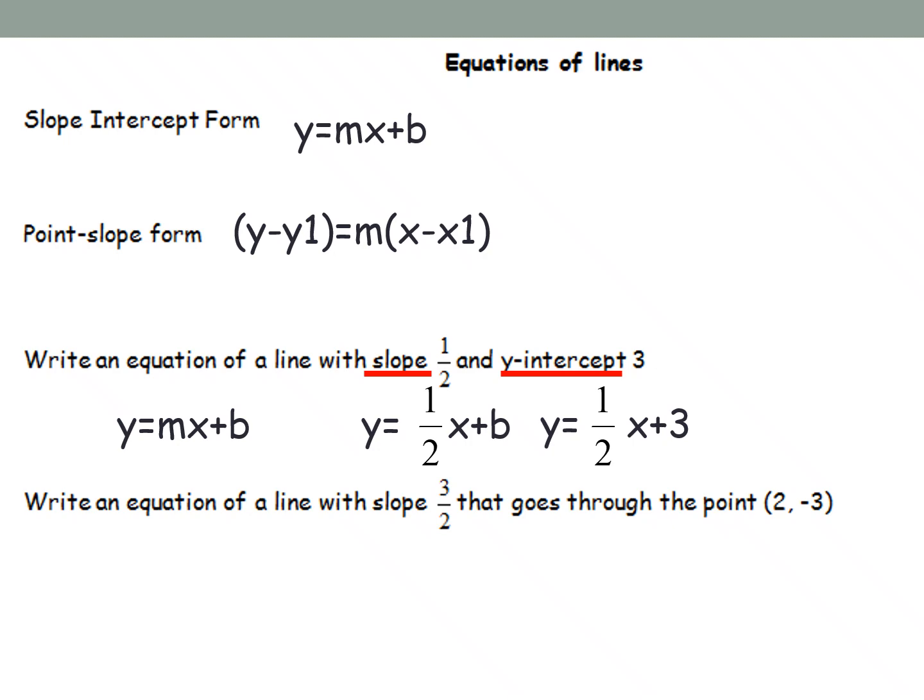And then for the second one, we have write an equation using our slope and a point. When you see that it needs to go through a point, then you know that you need to use point slope form, because that's the only one that we have that uses the point. So you'll write your equation out on the side, and then you'll substitute in where it all goes. As you can see, the points go in where your y1 and x1 go.